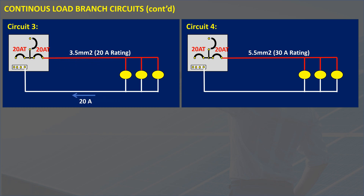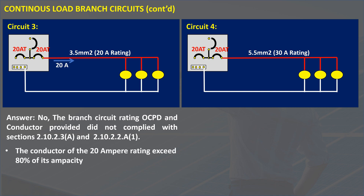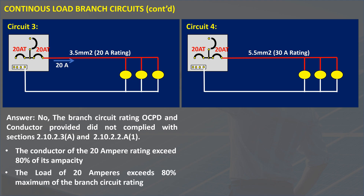How about circuit number 3? A 20 amperes continuous load is connected to a branch circuit rated at 20 amperes with a conductor rated at 20 amperes. Is this circuit compliant with the code? No. The overcurrent protective device of 20 amperes and the conductor provided did not comply with Sections 2.10.2.3 A and 2.10.2.2 A1. The conductor of the 20 amperes rating exceeds 80% of its ampacity, and the load of 20 amperes exceeds 80% maximum of the branch circuit rating.